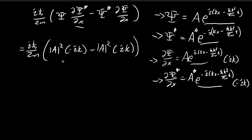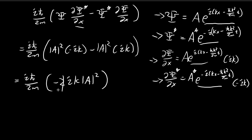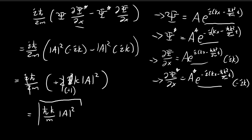We see that we have two identical terms, giving negative 2ik times |A|². The two's cancel, and multiplying the i's together gives i², which by definition equals negative one. This negative one combines with the existing sign to give a positive result. In the end we're left with ℏk divided by m times |A|² — and this is the answer.